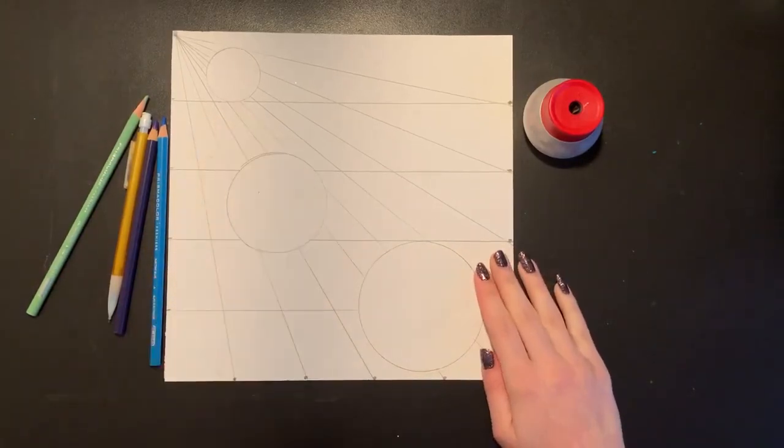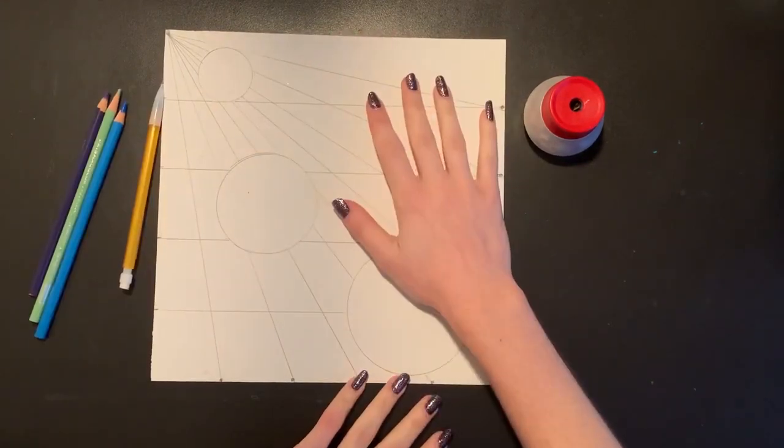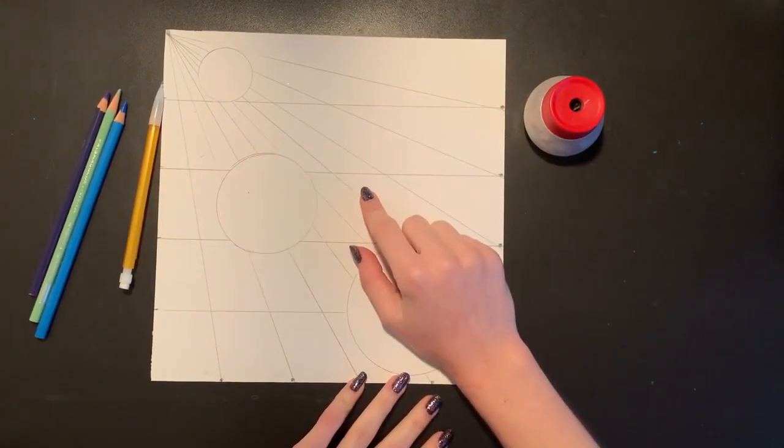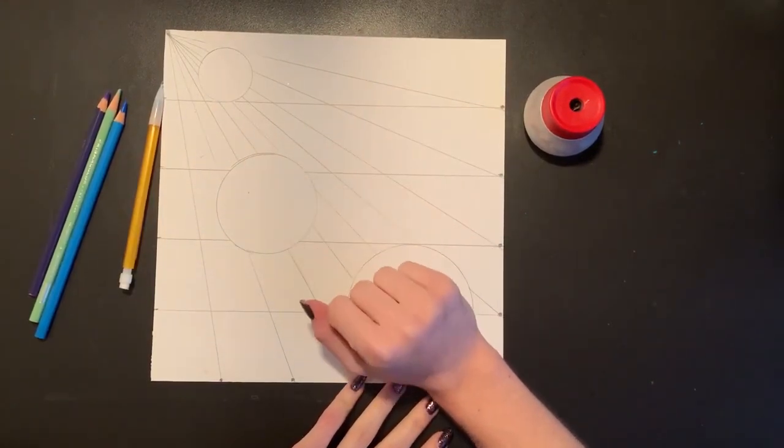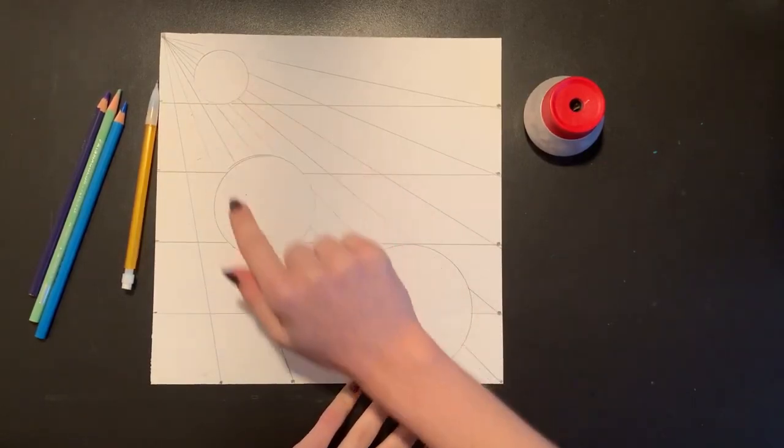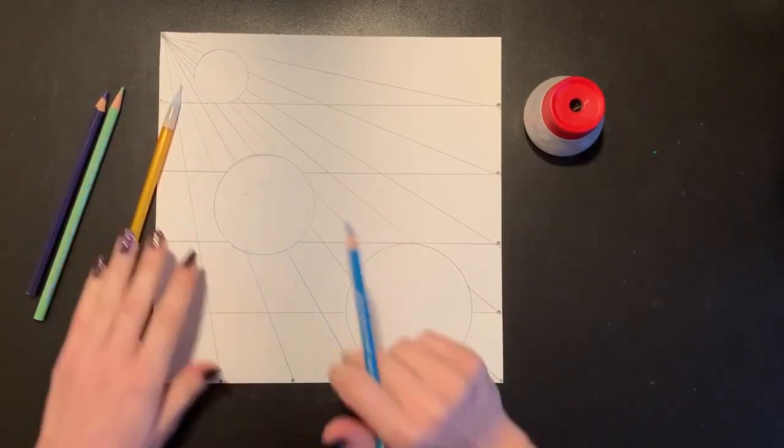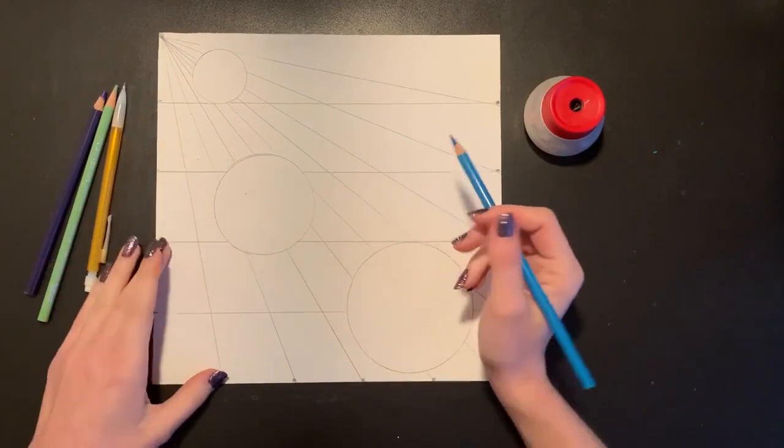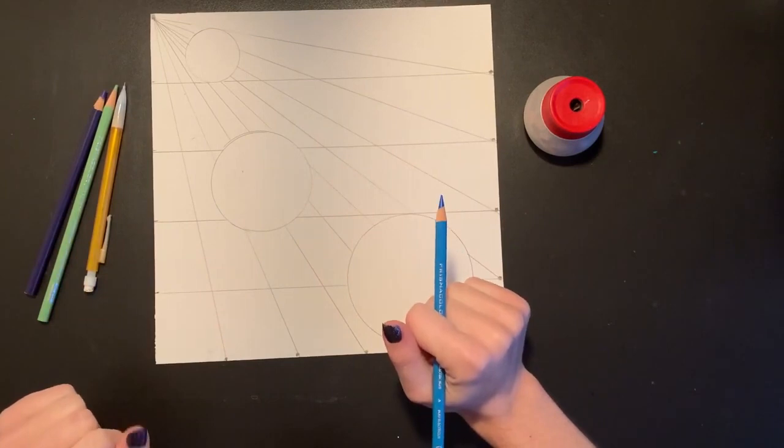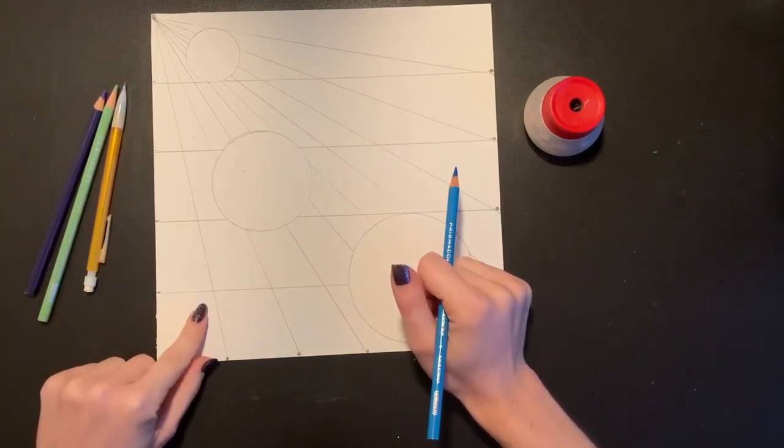Today we're going to finish our picture. The first thing we're going to do is color in our background. You want to make sure before you start coloring that there is nothing drawn inside your circles, so leave those blank for right now. I'm going to color my background with this blue colored pencil and we're going to create a pattern.